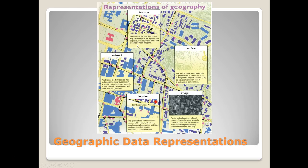Anything that's a point, line, or polygon. We also have surfaces, things like contours, that can represent landscapes and topography. We have images, aerial photographs, and digital elevation models that can represent geography. We have XY locations, like addresses, latitude and longitude coordinates that we can integrate within GIS.